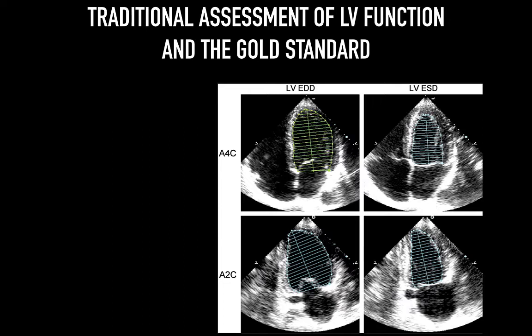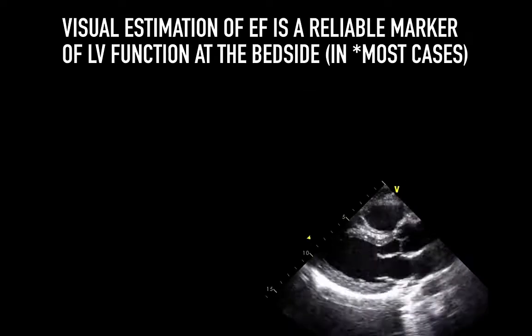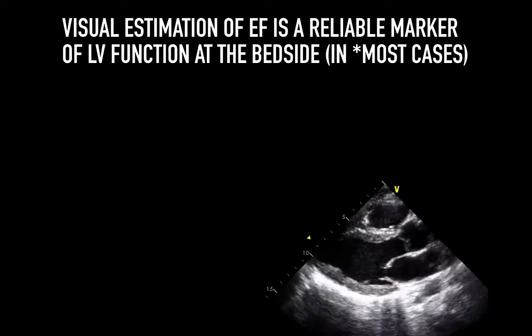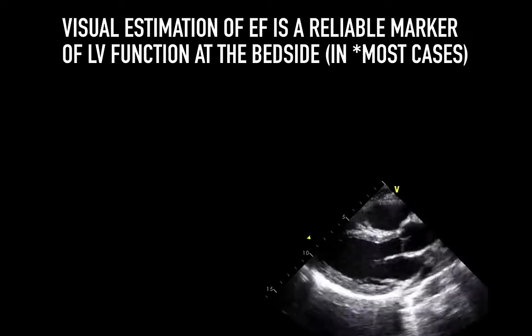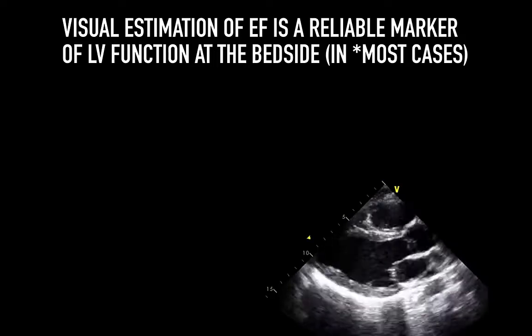All our export machines can actually do this, but it's quite meticulous and difficult to trace the endocardium with your finger. Instead, I recommend a basic visual assessment. The export can do this, but you need ECG leads and it is quite time-consuming. I would recommend more gross visual assessment at the bedside. Visual estimation of EF is a reliable marker. In fact, in most echo reports you've seen from the cardiologist, visual assessment will be the primary method at which LV function is determined.